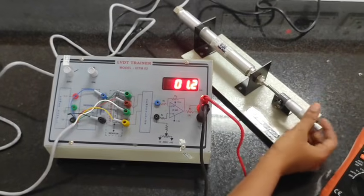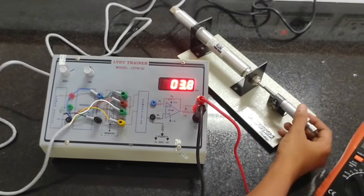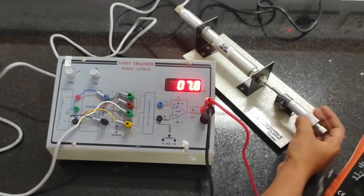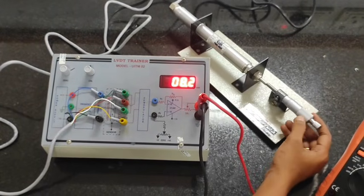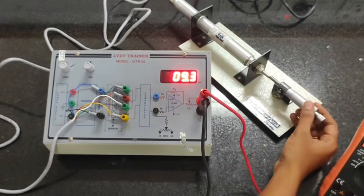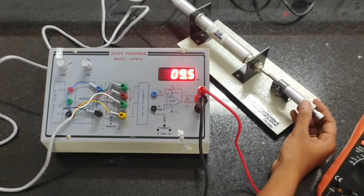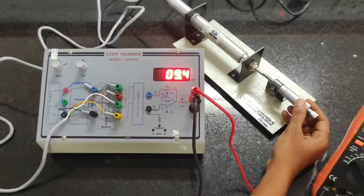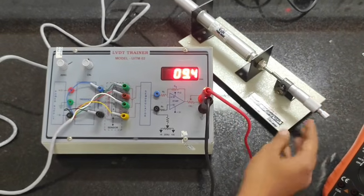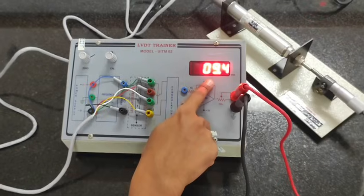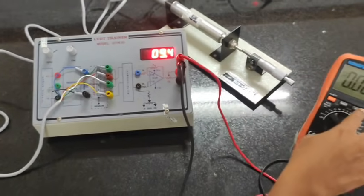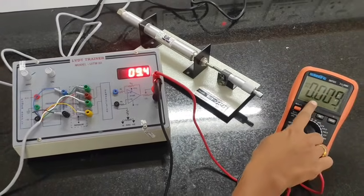Now I am increasing the value by moving this screw cage, which moves my core position outward toward the red side. The scale value will be increasing, and in the displacement also it is observed - the value is increasing. For the maximum position, I have to check whether the displacement is increasing in a linear way and correspondingly whether the voltage is varying.